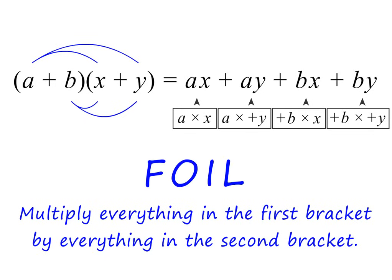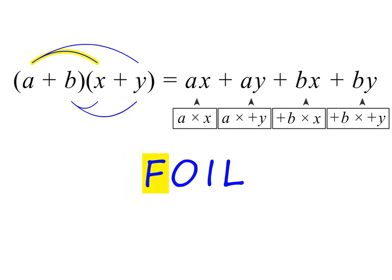Some people like to use the word FOIL to remind them how to do this multiplication. F reminds us to multiply the first term by the first term. O reminds us to multiply the two outer terms. I reminds us to multiply the two inner terms. And L reminds us to multiply the two last terms. Please pause and try to memorize this pattern.